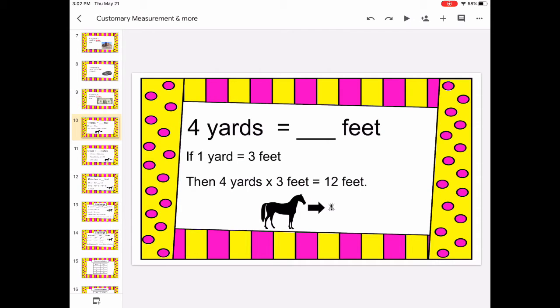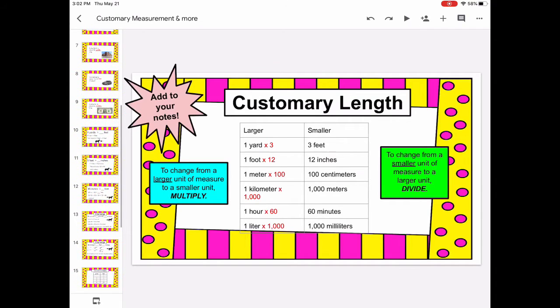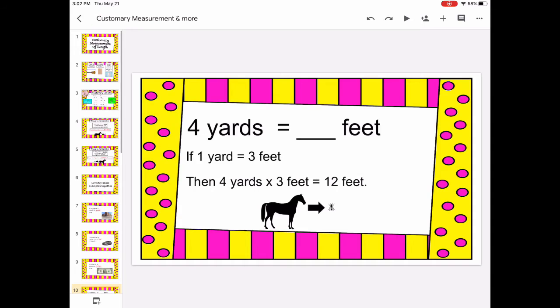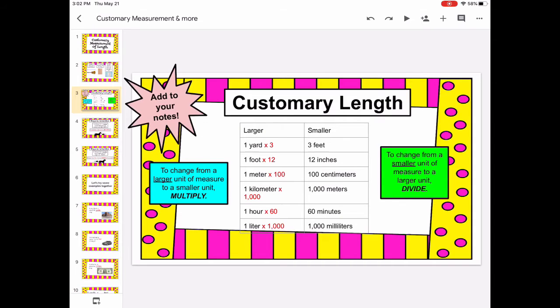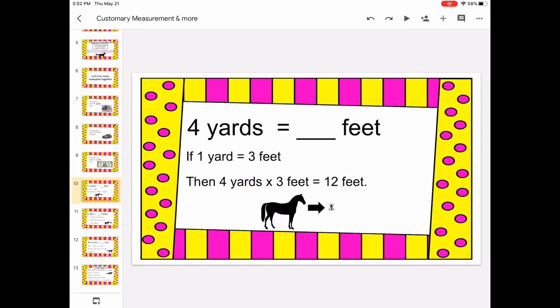So now when you have these ideas up here in the customary length chart, you'll be able to see what you have to do to change from larger measurements to smaller measurements. So if we look down at the first example for yards to how many feet, I would say well yards to feet. Yards is larger, feet is smaller.